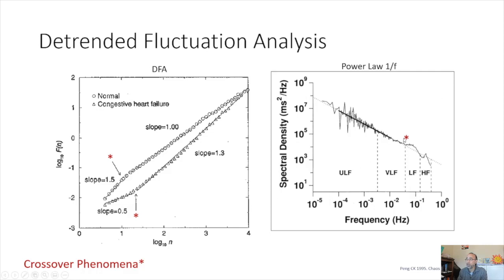This crossover phenomenon occurred in roughly the same region where the power law 1/f graph changed from a linear to non-linear relationship — around 0.03 hertz. The physiological significance of this crossover is unclear, but something is happening at that frequency region. Because of these different slopes, C.K. Peng divided DFA into two parts: alpha 1 for higher frequencies and alpha 2 for lower frequencies.